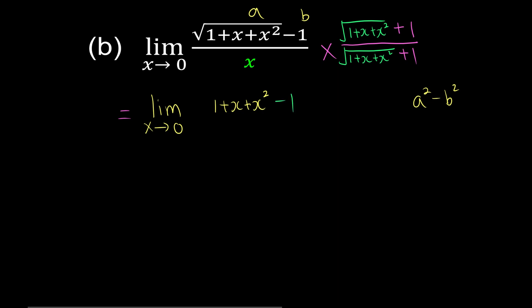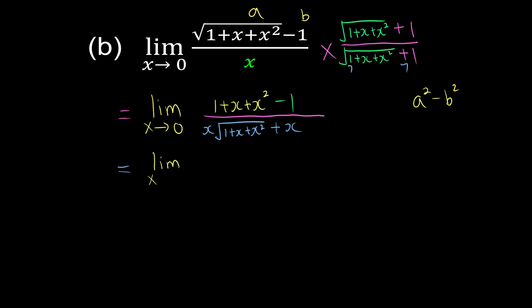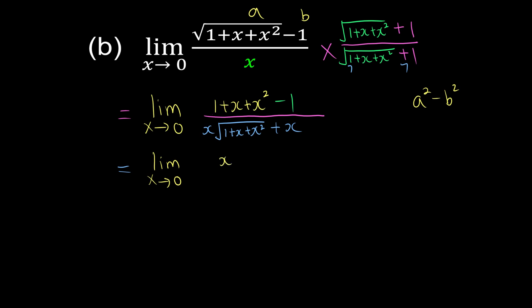At the bottom we expand: x times the conjugate gives x times square root of 1 plus x plus x squared, and don't forget x also times 1, giving plus x. Simplifying the numerator: 1 minus 1 cancels, leaving x squared plus x. The denominator remains more complicated, so we keep it as is for now.